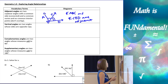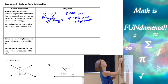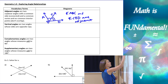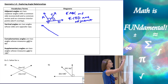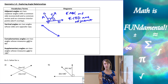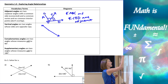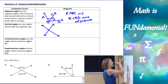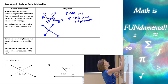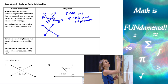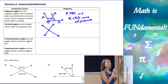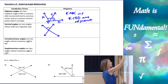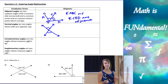Vertical angles are two angles whose sides are opposite rays. If this is my vertex, opposite rays are two rays that go in exactly opposite directions, so they make a straight line. If I draw another set of opposite rays, we end up with an X shape. Vertical angles are not going to be adjacent — they're not going to share a side — but they share a vertex and their sides are opposite rays.